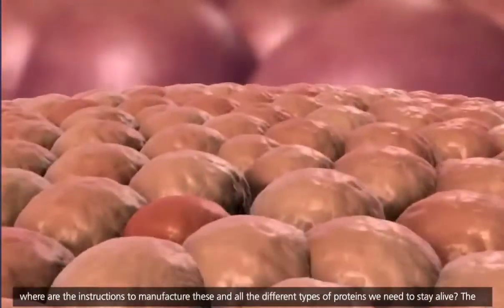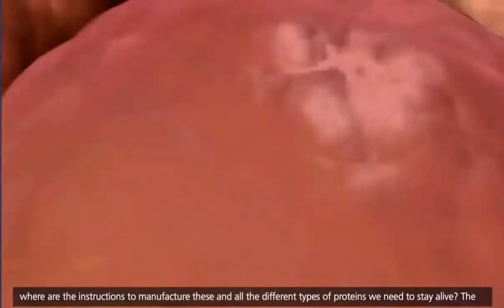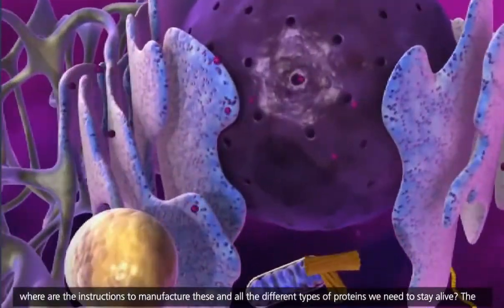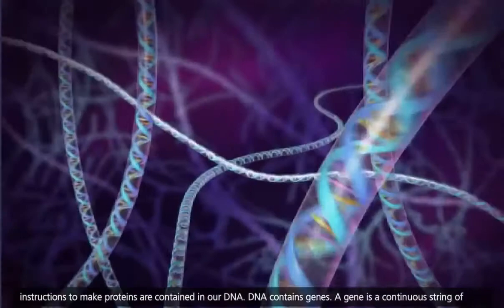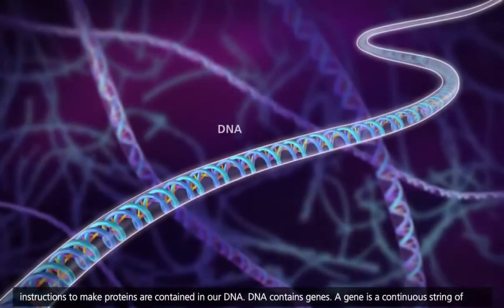And where are the instructions to manufacture these and all the different types of proteins we need to stay alive? The instructions to make proteins are contained in our DNA.